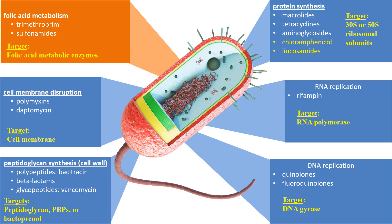The third mode of action will be to inhibit a key metabolic pathway that's unique to bacteria. An example often used is the metabolic pathway that produces folic acid. These antibacterial drugs act as an enzyme substrate and bind to the enzymes, stopping the pathway in its tracks. The fourth mode of action will be to inhibit or prevent protein synthesis.